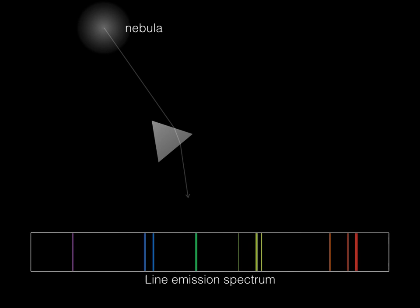If we were to observe a nebula, although this time the neighbouring star was not directly behind it, what we would see when passing the light through a prism would look like this, a line emission spectrum. By measuring the wavelengths at which the coloured lines appear this time, we can identify the elements present in the nebula.